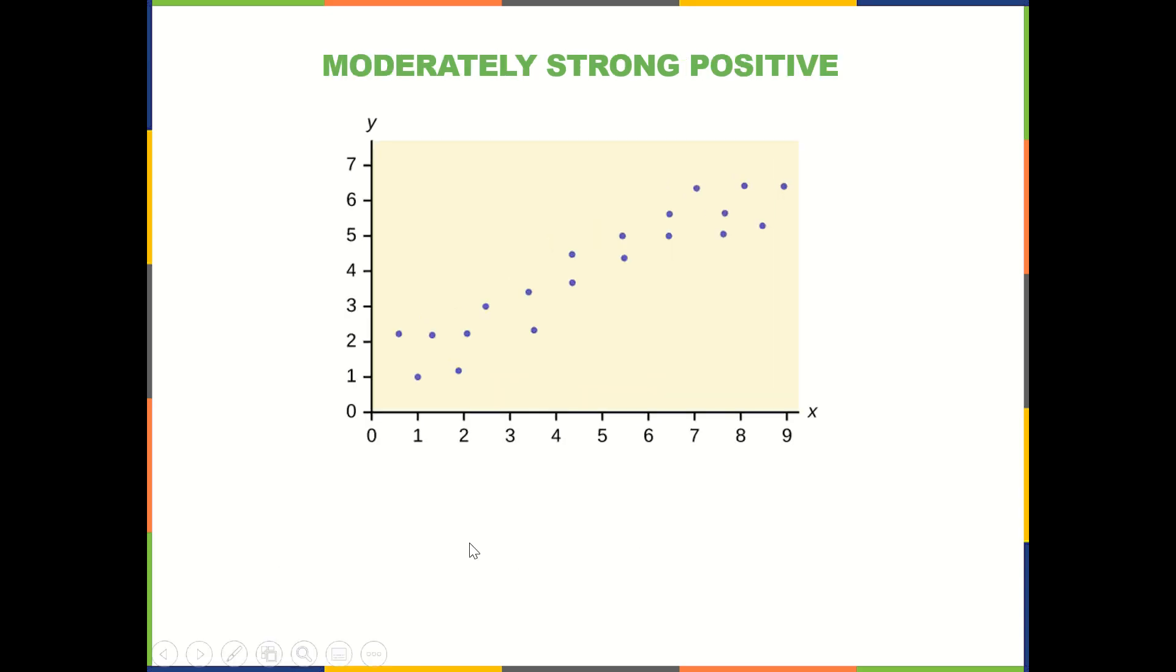Let's look at some examples. This one is moderately strong. So try to think of what the r correlation could be out of these choices. And these are just made-up estimations to give us something to think about here.